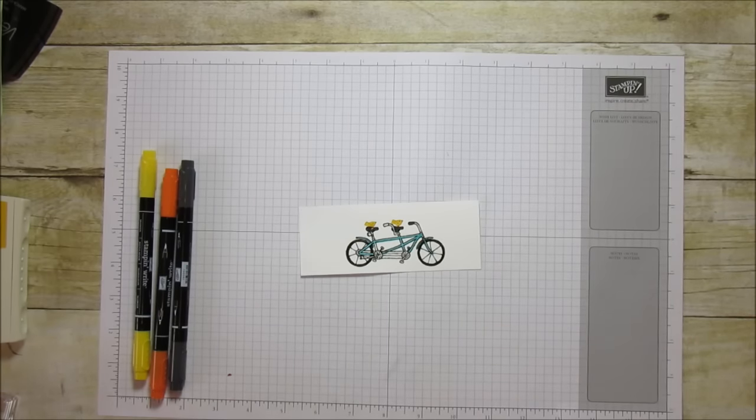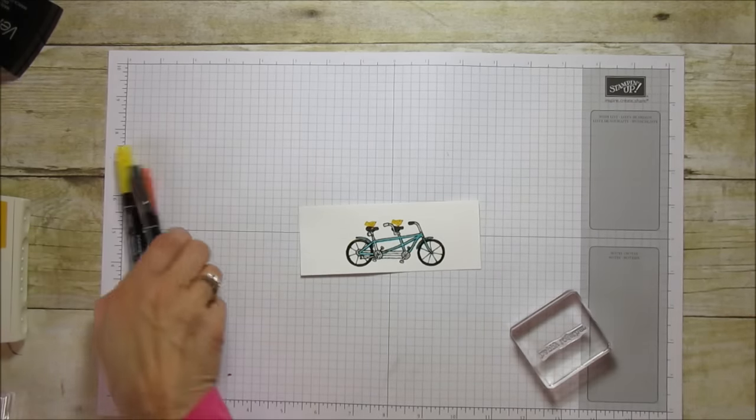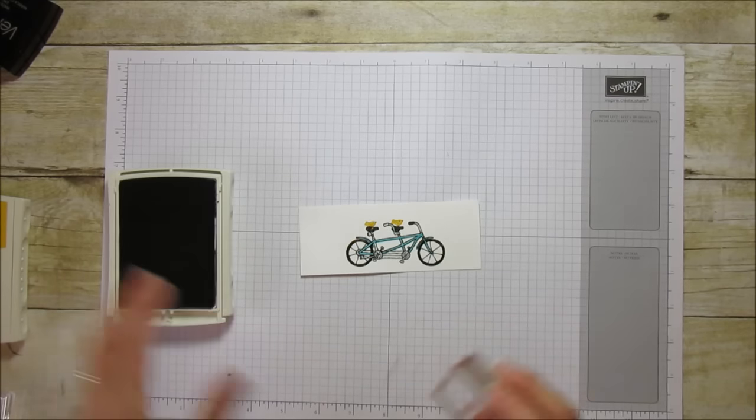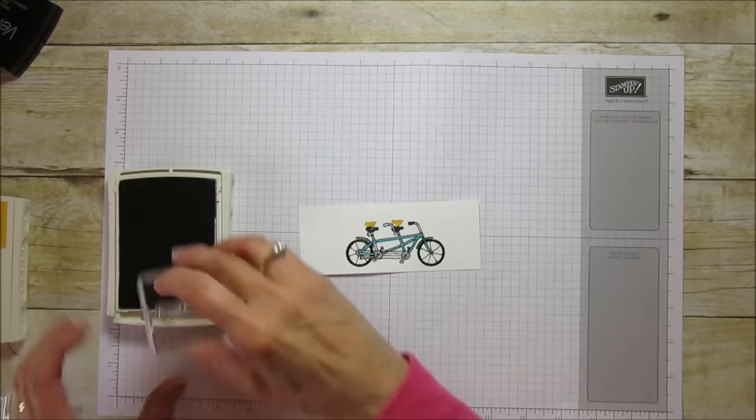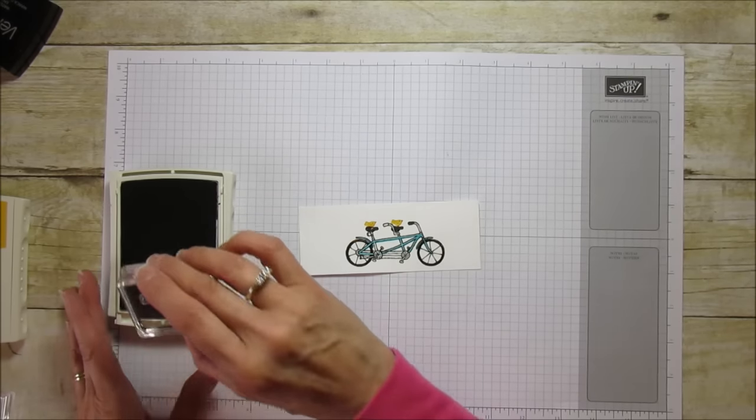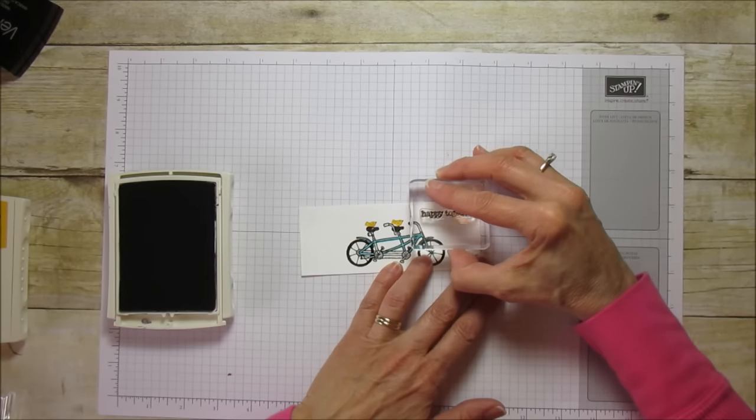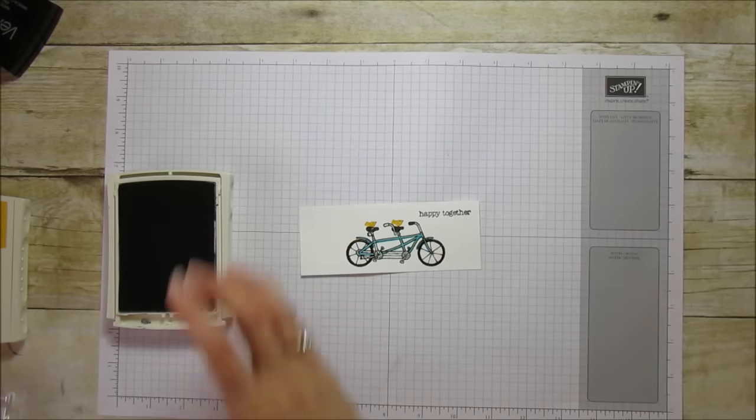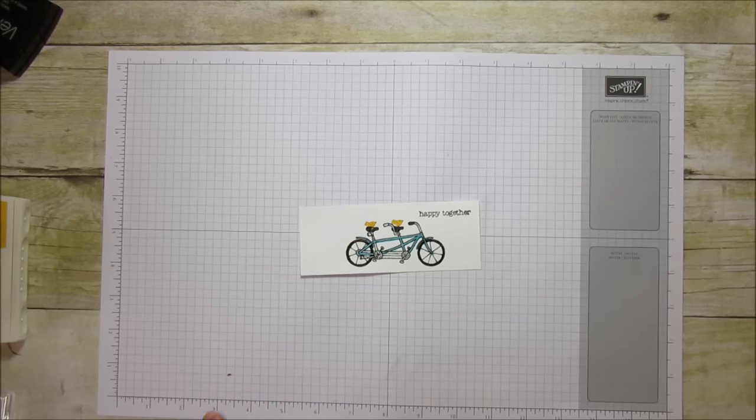I'm going to grab the sentiment and basic black. We're going to stamp "Happy Together" right up here at the top. I can't see - hopefully that's straight.